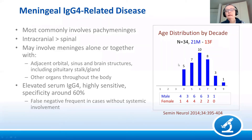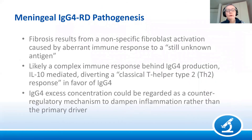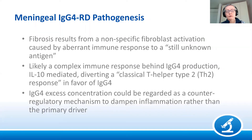The age distribution shows this is typically a disease of adults, with maximum frequency between the fifth and seventh decade. The fibrosis represents a nonspecific fibroblastic activation caused by an aberrant immune response to an unknown antigen. The pathogenesis involves a complex immune response behind IgG4 production, likely IL-10-mediated, diverting a classic Th1/Th2 response in favor of IgG4. The IgG4 excess is probably a counter-regulatory mechanism to decrease inflammation rather than a primary driver — so IgG4 is a good marker but likely not central to pathogenesis.